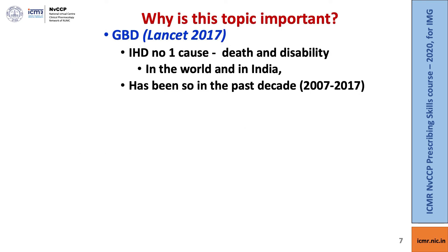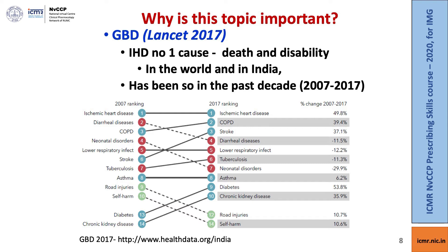Why is this topic important? The global burden of disease published in the Lancet in 2017 indicated that ischemic heart disease is the number one cause for death and disability in the world as well as in India, and it has been so in the past decade. You will see here in 2007, the ranking for ischemic heart disease was number one, 10 years later it continues to be number one, and the percentage change over 10 years is 50% — there's been a 50% increase in the burden of ischemic heart disease globally.